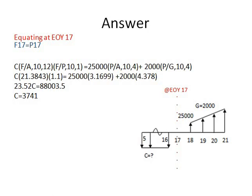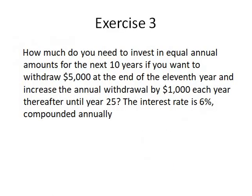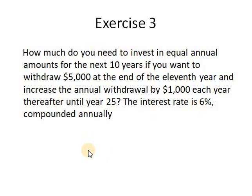It is basically the same concept repeated with different scenarios and different cash flow diagrams. Exercise 3: How much do you need to invest in equal annual amounts for the next 10 years if you want to withdraw $5,000 at the end of the 11th year and increase the annual withdrawals by $1,000 each year thereafter until year 25? Interest rate is 10%.